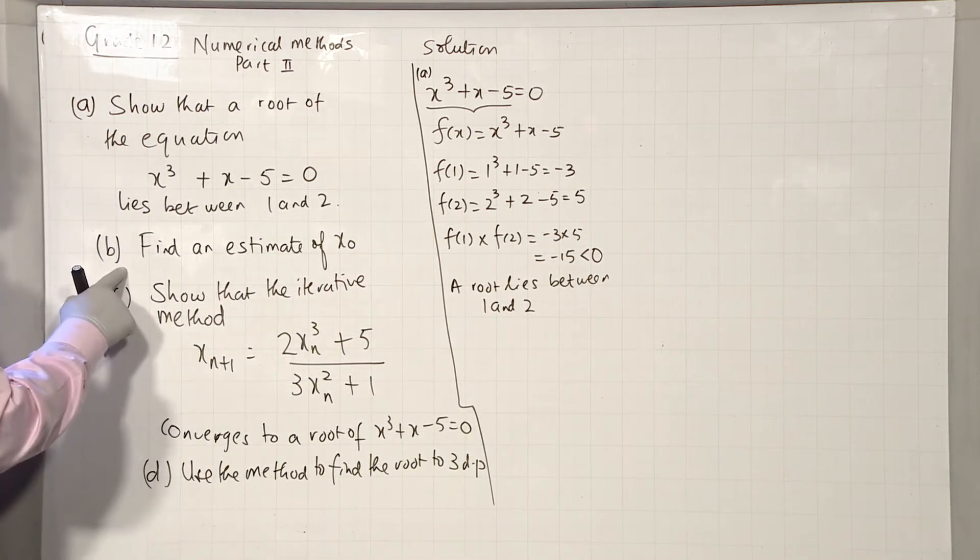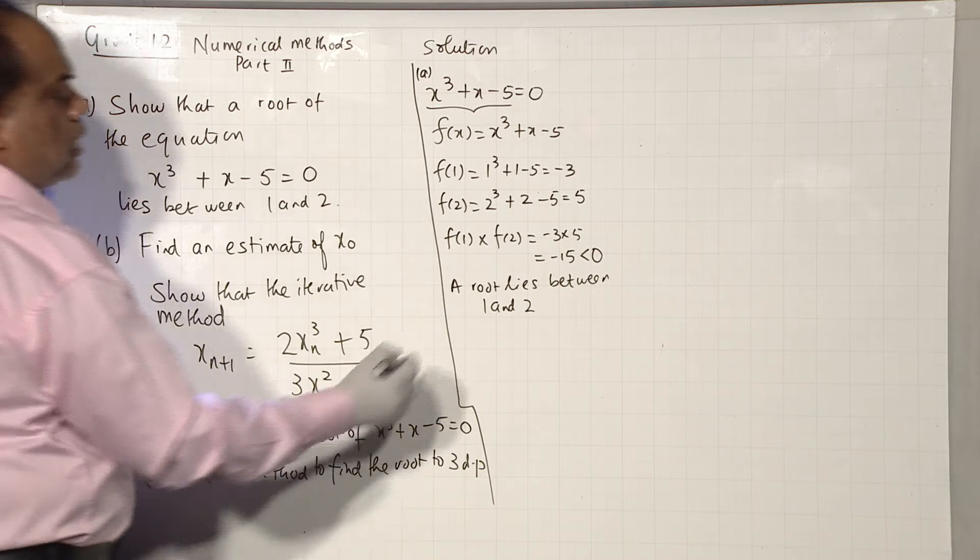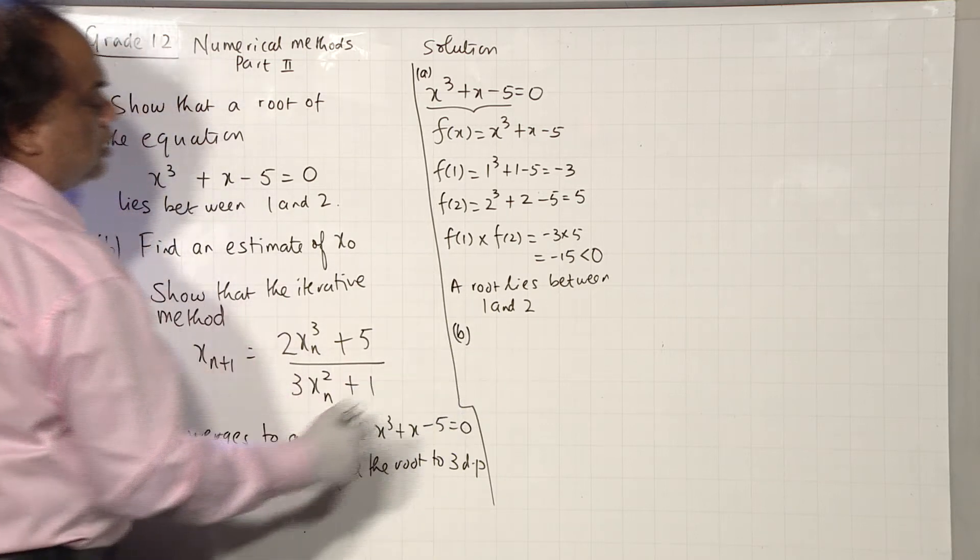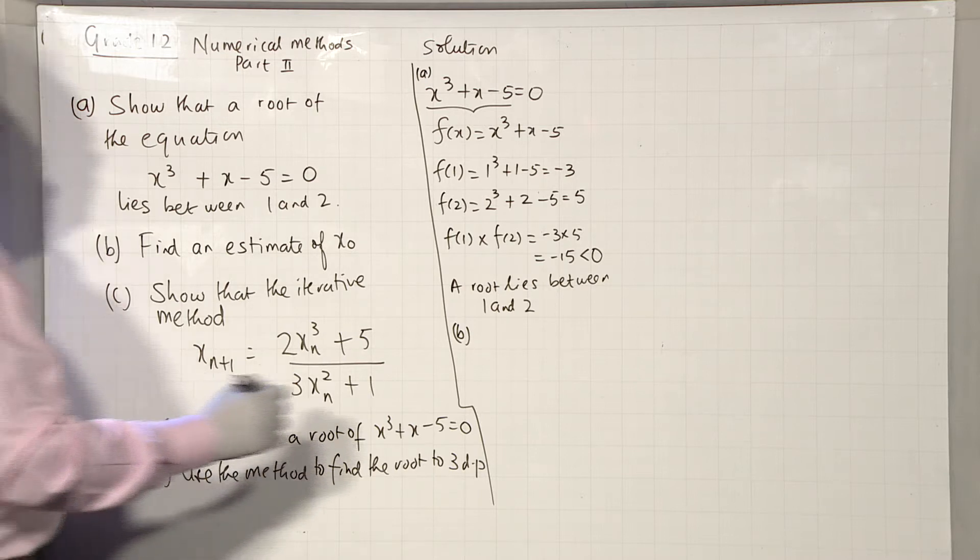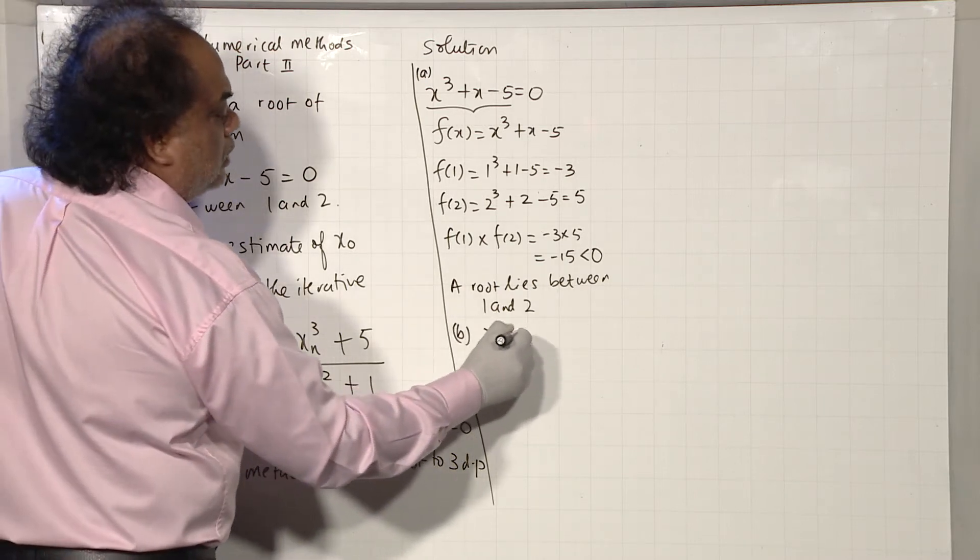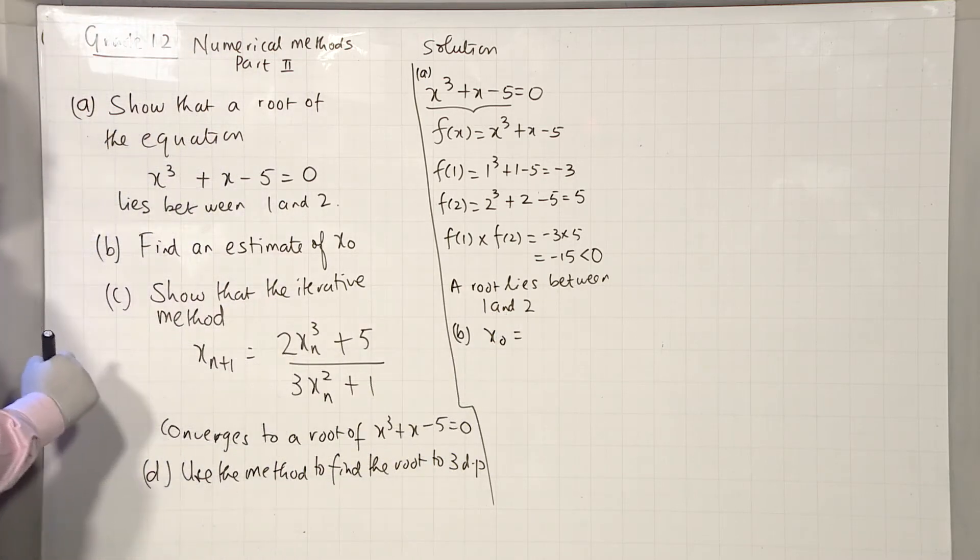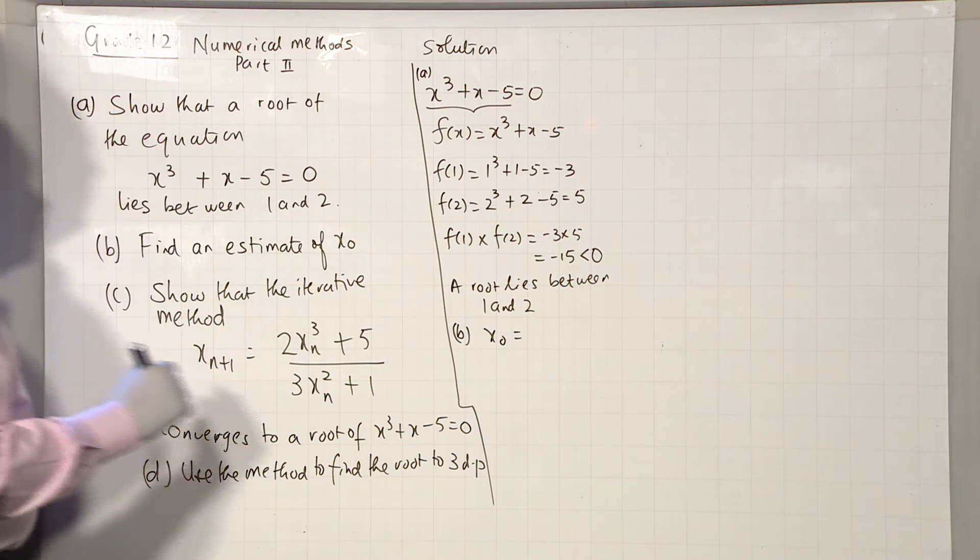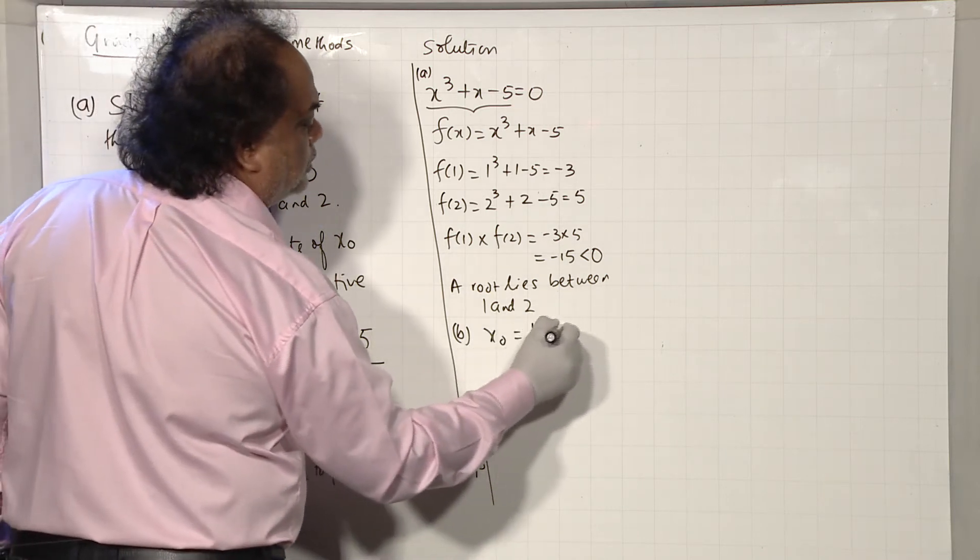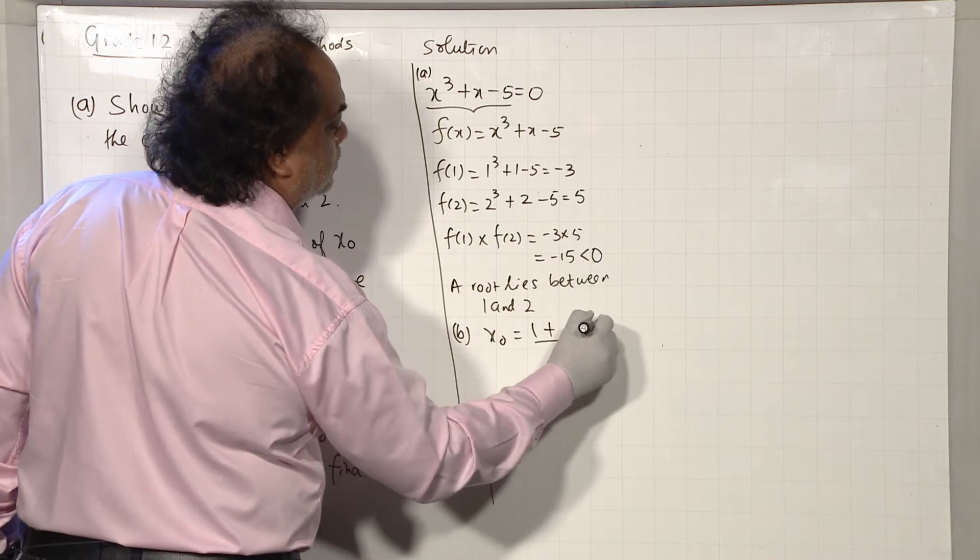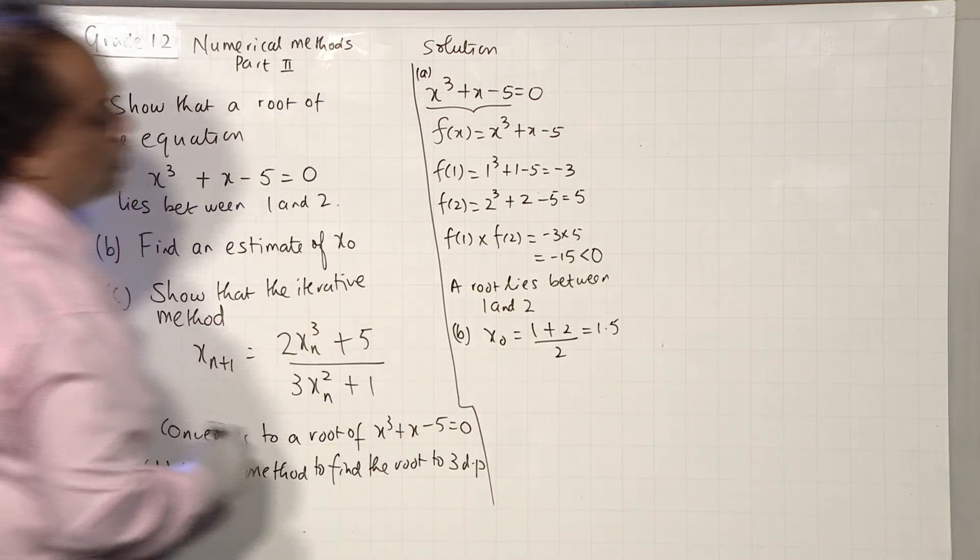Now, the next part asks us to estimate x₀. How do you find x₀? Since I have already proved that the root lies between 1 and 2, I'm going to take the average, 1.5.